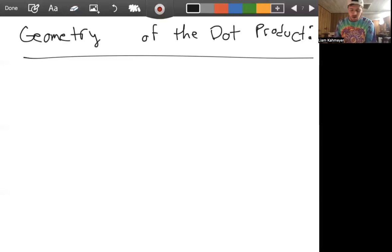So let's look at the geometry of the dot product. Let's say we have two vectors, U and V in R^n. So our ambient space here is just n-dimensional space.